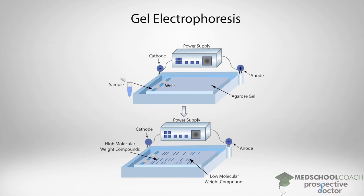Positively charged molecules are going to move towards the cathode, which is negatively charged, and negatively charged molecules are going to move towards the anode, which is positively charged. In the situation where all molecules have the same charge — such as DNA, which has a negative charge — all the molecules are going to migrate towards the positively charged anode. Since they're all moving in the same direction, separation is achieved by the pores in the gel, so smaller molecules move through faster and larger molecules move more slowly.